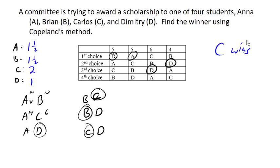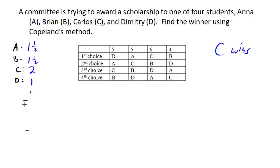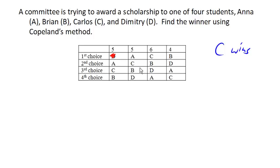Now we're going to see a slight problem with Copeland's method. It turns out that Dimitri wasn't actually eligible for this scholarship, so we're going to have to eliminate Dimitri and rerun the election with just these three candidates.